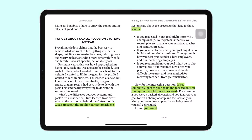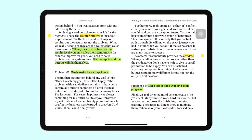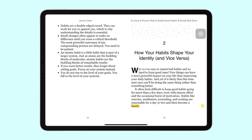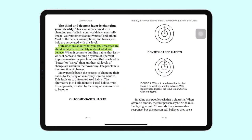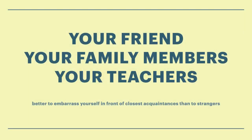When reading, you need to highlight vocabulary and search for the meaning immediately. It is better if you jot it down in a notebook and recap the words when you encounter them again. The next tip is to speak English to certain people frequently — it could be your friend, your teacher, or your family members. It is better to practice in front of your closest acquaintances than in front of strangers or clients in the future.